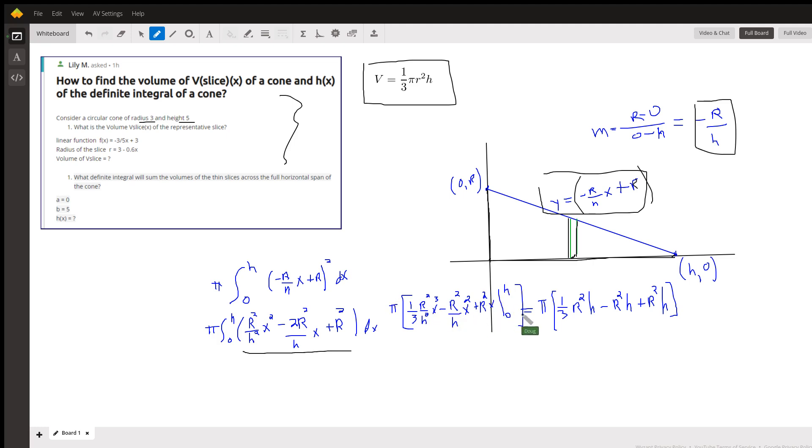And what happens is we get one-third r squared h here, and these two terms cancel out. So there's the formula right there.